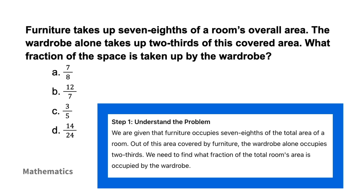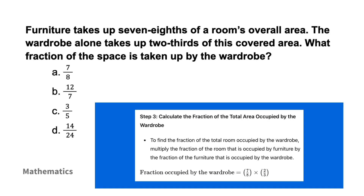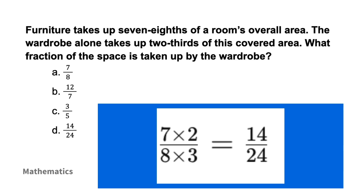Always start by understanding the problem. Furniture occupies seven-eighths of the total room area, and out of that area, the wardrobe alone occupies two-thirds. We need to find what fraction of the total room area is occupied by the wardrobe. Express the problem with fractions: total area is 1 (whole room), furniture area is 7/8, wardrobe area is 2/3 of furniture. Multiply the fractions — numerators together and denominators together — giving us 14 over 24.